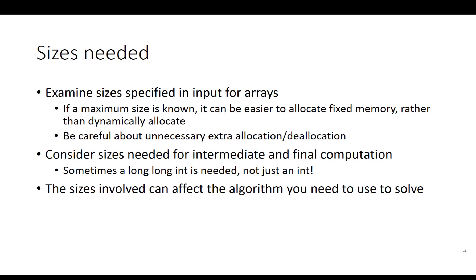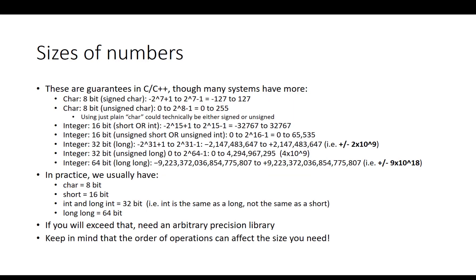To give you an idea of C++ type sizes: a char is typically 8 bits, a short int is 16 bits, an int or long int is 32 bits, and a long long is typically 64 bits. If you need more than that, you need an arbitrary precision library, which is not part of the C++ standard. In Java there is a BigNum library, and it's automatic in Python. Also keep in mind that the order of operations can affect size needed — for example, multiplying two integers might require a long long for the product even if you divide afterward.